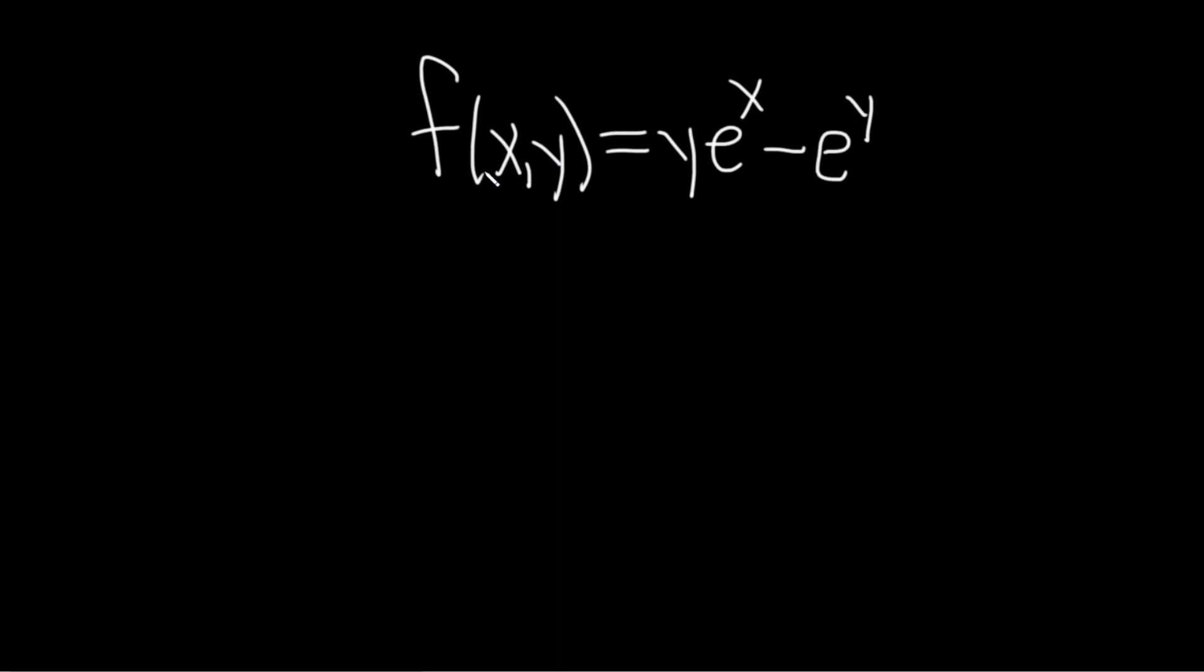The second derivative test requires two steps. Step one is to solve this equation: set the first partial with respect to x equal to zero and the partial with respect to y equal to zero. Let's say you solve this and get (a,b) as an answer. The next step says that you have to look at something called D. Big D is defined as fxx times fyy minus the mixed partials squared, and then you investigate what happens at (a,b).